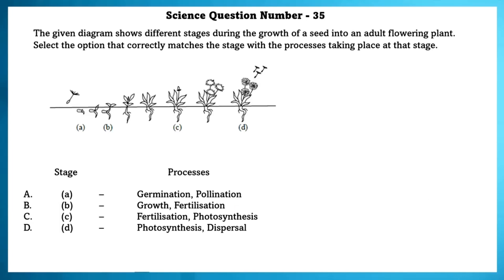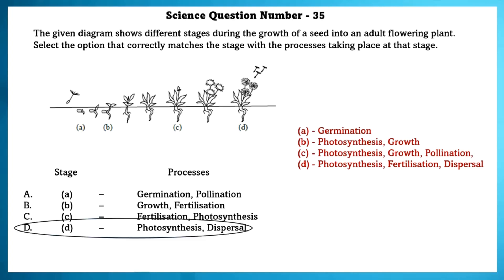Science question number 35. The given diagram shows the stages during the growth of a seed into an adult flowering plant. Select the option that correctly matches the stage with the processes taking place at that stage. In the A stage, we have germination, B, photosynthesis, growth, C, photosynthesis, growth and pollination, D, photosynthesis, fertilization, dispersal. The correctly match one is the D option.